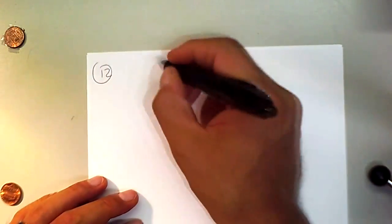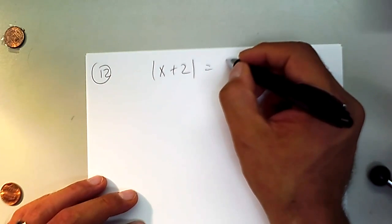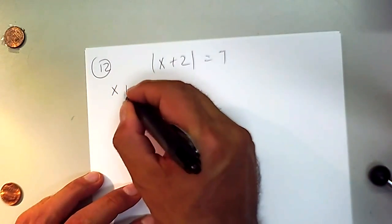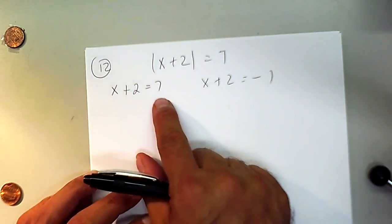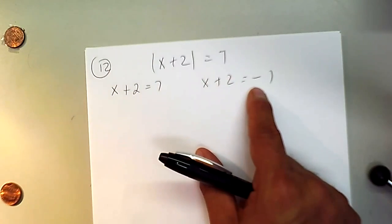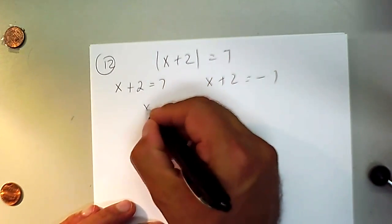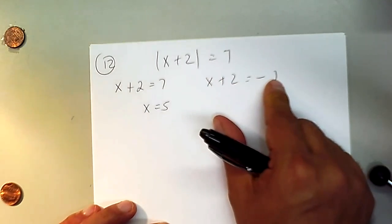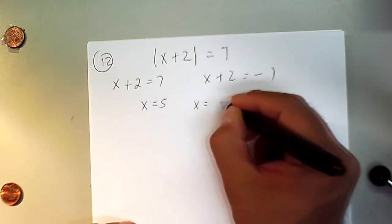Example 12: |x + 2| = 7. Two cases: x + 2 = 7 or x + 2 = −7. Subtracting 2 from each: x = 5 or x = −9. Don't jump to the conclusion that because you got 7 and −7, the answers are symmetric around zero — solve each equation individually.